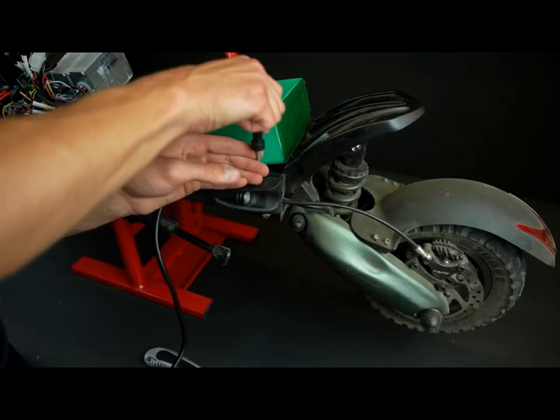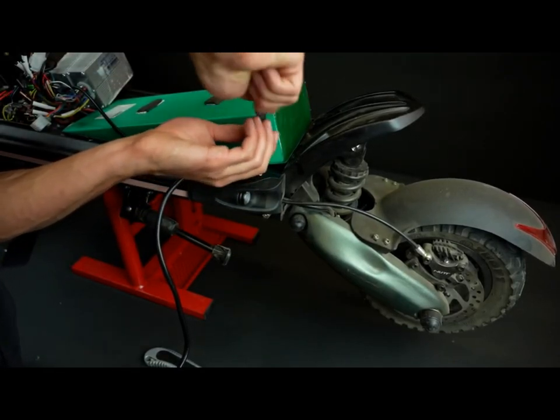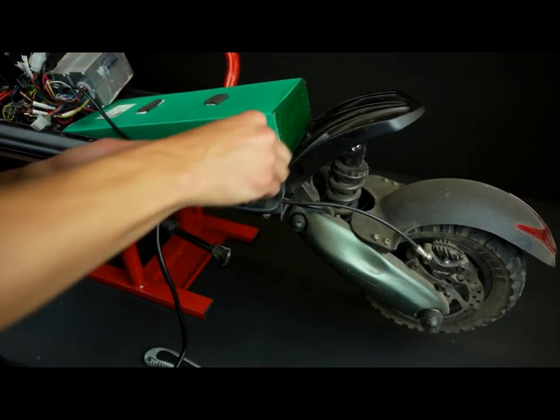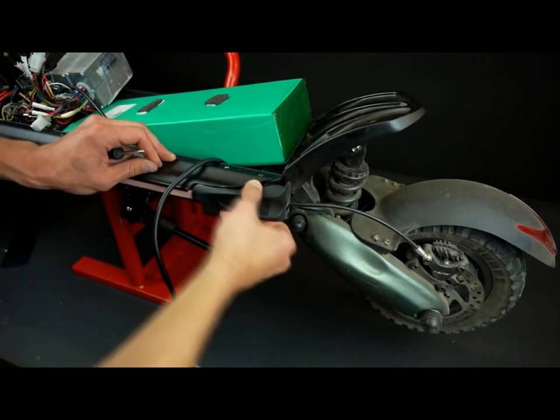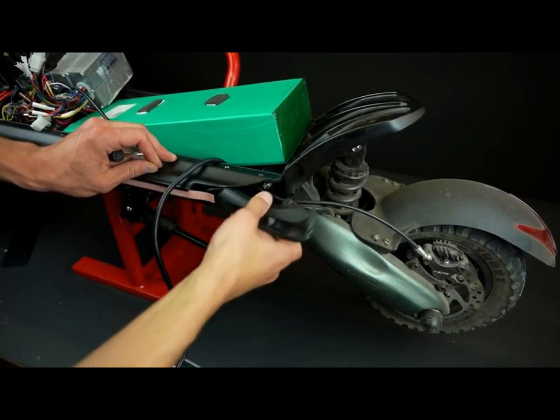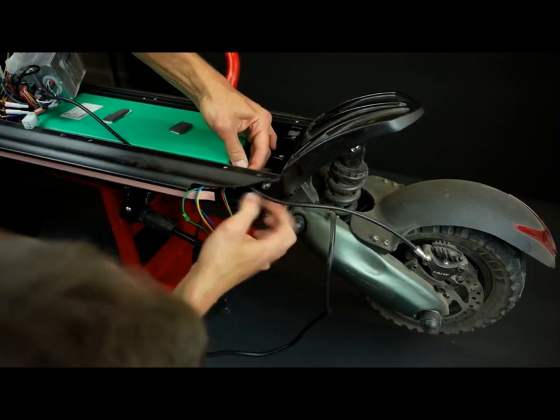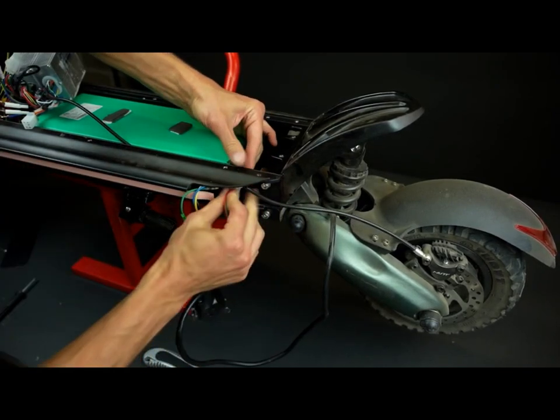Now remove the screw on the top of the rear light cover. Next, gently pull out all the motor wires through the hole in the scooter's frame like we are doing here.